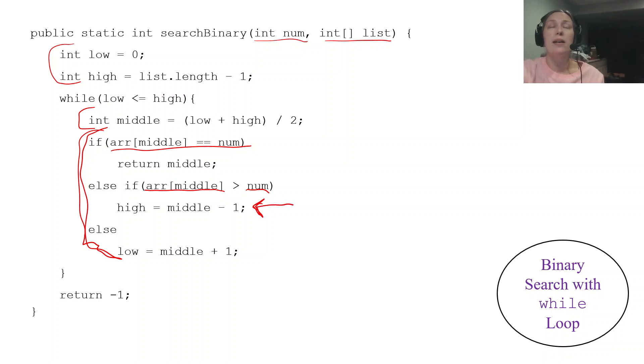And this is what we did in the example we just did. We kept changing our high to middle minus 1, or maybe it's in the upper half of the list and you have to change your low index. But all of that takes place in a while loop. That's the iterative. We call that the iterative binary search - binary search done with a while loop. Now let's take this code and let's look at the recursive binary search.